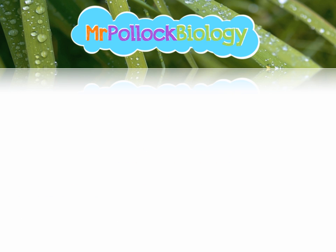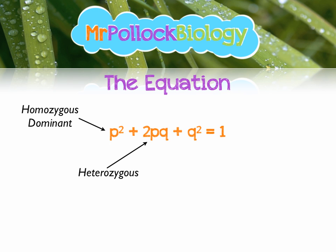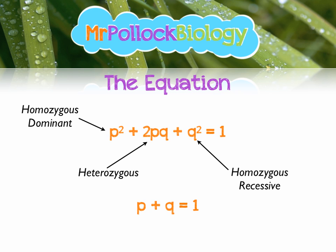Without further ado, we should look at the equation itself. P squared refers to the percentage, expressed as a decimal, of homozygous dominant individuals. 2PQ refers to the number expressed as a decimal percentage of heterozygous individuals in that population. And Q squared, to make up the whole population, is homozygous recessive. We also know that there's an extra equation that goes along with that, which is P plus Q equals 1, where P is the dominant allele and Q is the recessive allele.